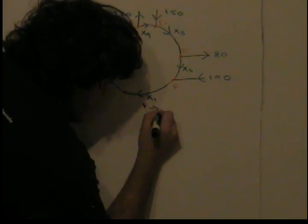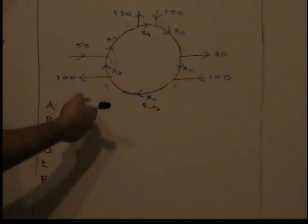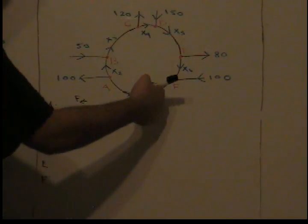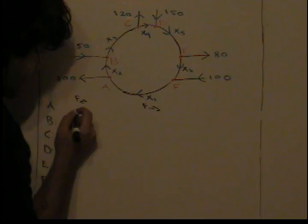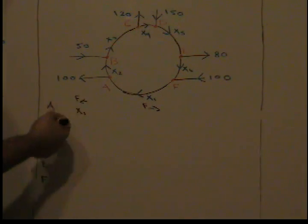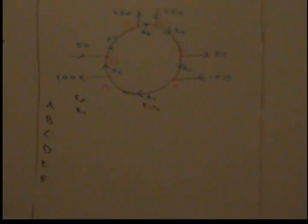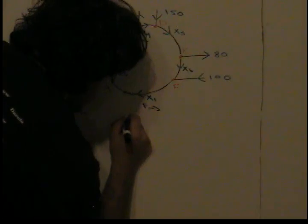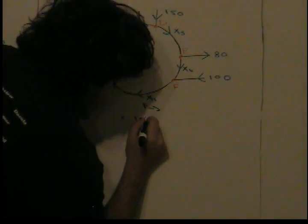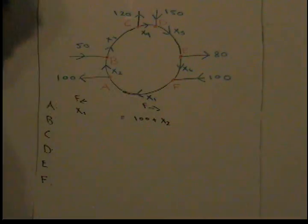Let's start at junction A or node A. What goes into node A looks like just x1. What goes out of node A looks like 100 plus x2. So x1 has to equal 100 plus x2. Inflow has to equal outflow.